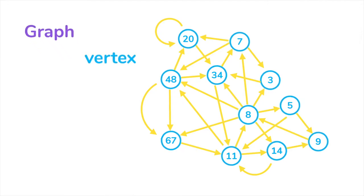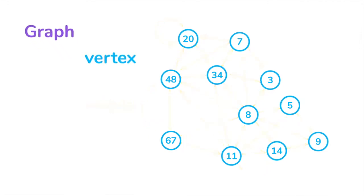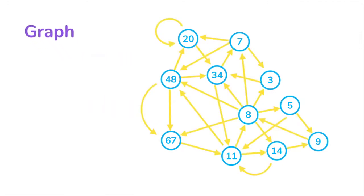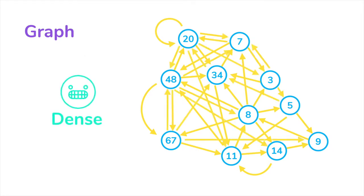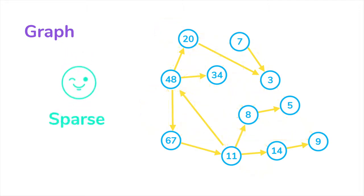So for graphs we call these vertices and these are called edges. When the graph has many edges we call it dense, a dense graph. When it has relatively less edges we say that the graph is sparse.